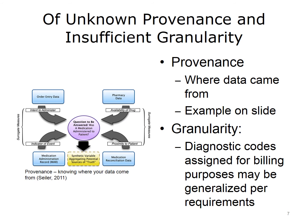One challenge for clinical data is that we may not know the provenance of the data — in other words, where the data came from. For example, the figure in this slide looks at data used to answer the question of whether a medication was administered to a patient. There may be a number of places in the record where that data exists: when the clinician does order entry with an intent to administer, the medication administration record, data from the pharmacy regarding whether the drug is available to be given, and data used for medication reconciliation. None of these data sources is perfect, and they sometimes conflict. When we're using such data, we should know where it comes from.